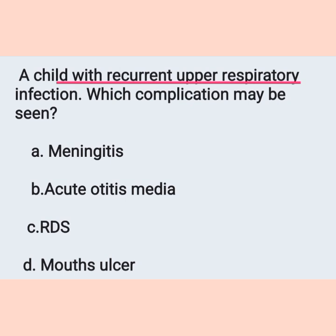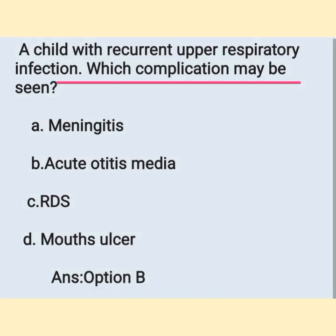First question: A child with recurrent upper respiratory infection — which complication may be seen? Option A: meningitis. Option B: acute otitis media. Option C: RDS, that is respiratory distress syndrome. Option D: mouth ulcer. The question is which complication can be seen in a child with frequent upper respiratory tract infection.